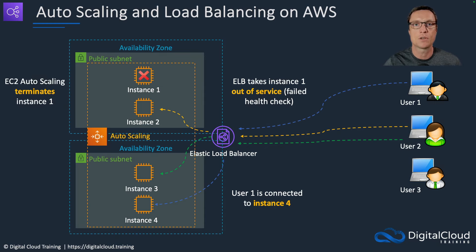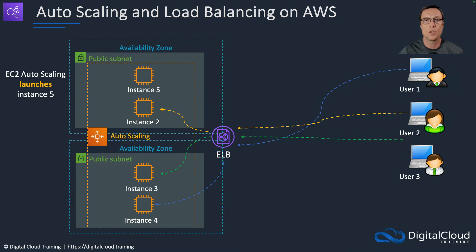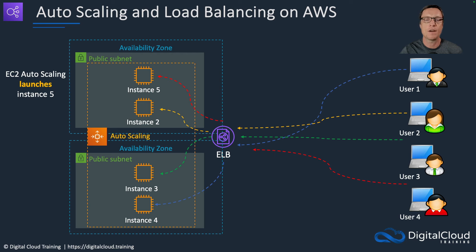The load balancer can notify the auto scaling group when an instance is unhealthy. The auto scaling group also runs EC2 status checks to see if the instance is healthy, then it terminates the unhealthy instance and launches a new one so that new traffic can be sent to it. We're constantly maintaining the right number of healthy instances at the minimum we want, replacing failed instances, and if load increases, auto scaling will launch more instances for us.